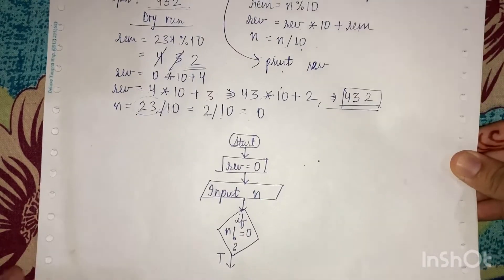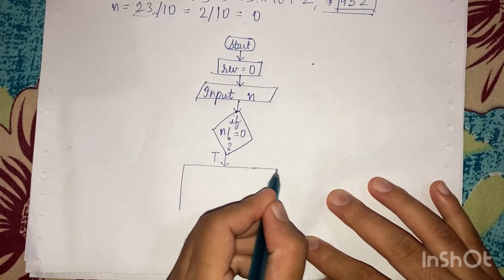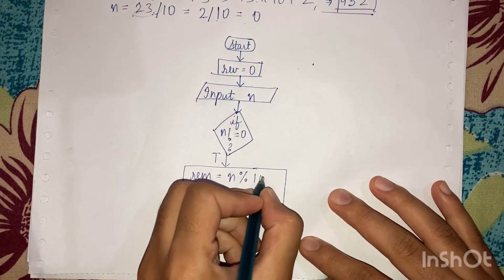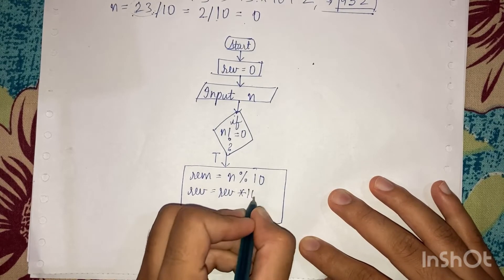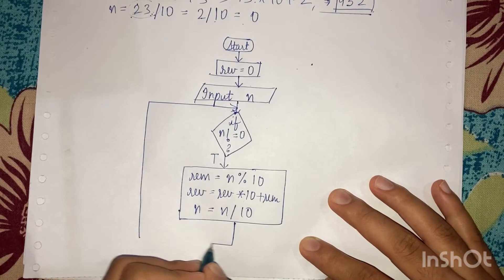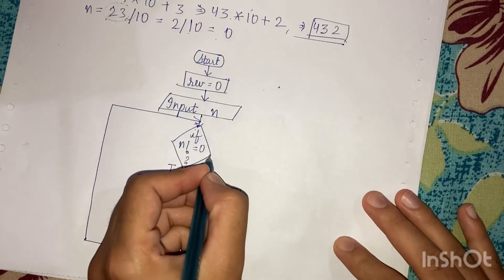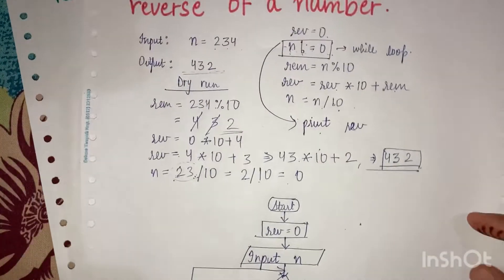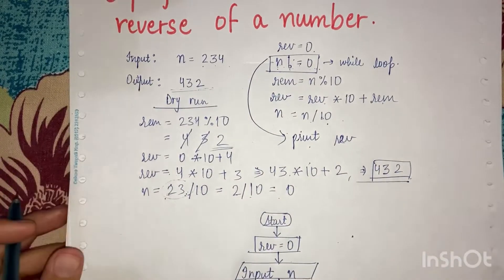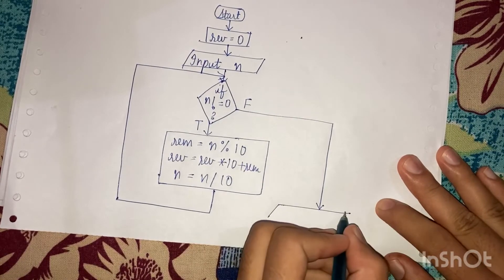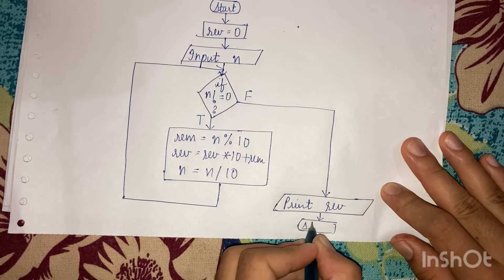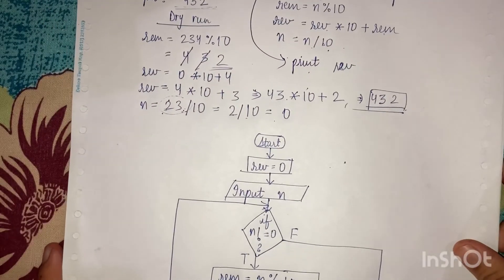If the condition is true, we perform three operations: first, rem = n modulus 10; then rev = rev * 10 + rem; then n = n / 10. In a while loop we connect this back to the top of the condition. If the condition is false, we print the value of rev, then stop. This completes the flowchart.